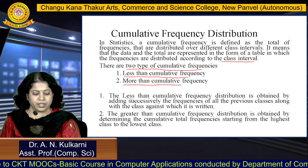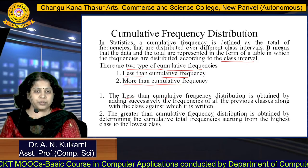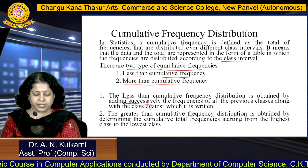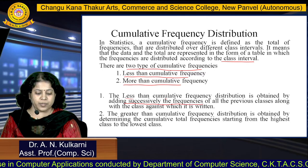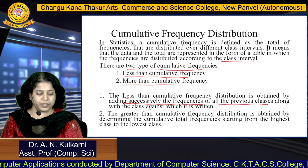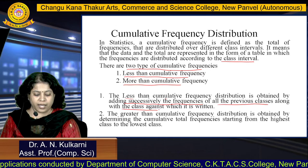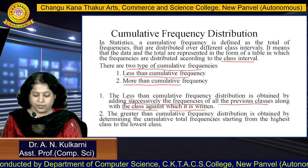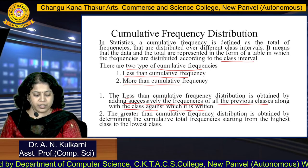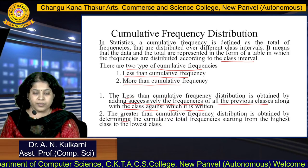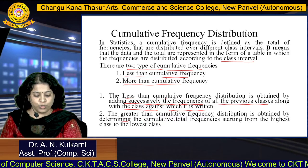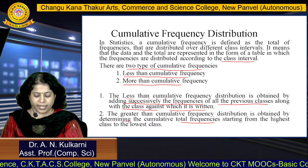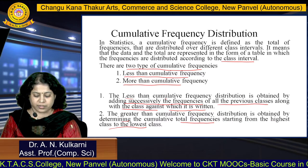Less than cumulative frequency distribution is obtained by adding successively the frequency of all the previous classes along with the class against which it is written. Greater than cumulative frequency distribution is obtained by determining the cumulative total frequencies starting from the highest class to the lowest class.